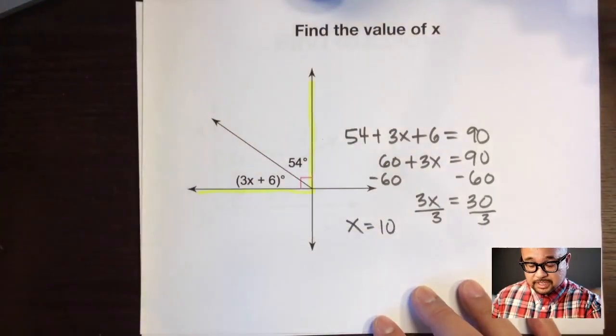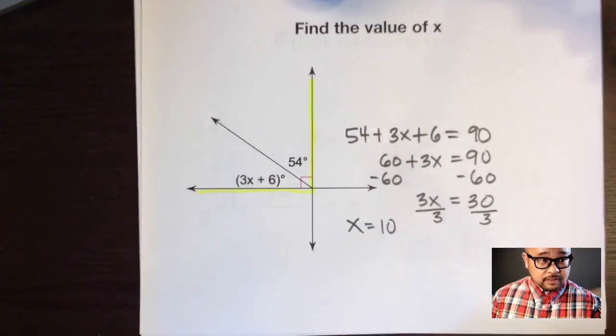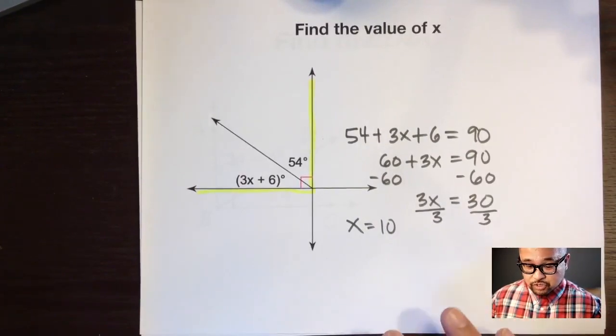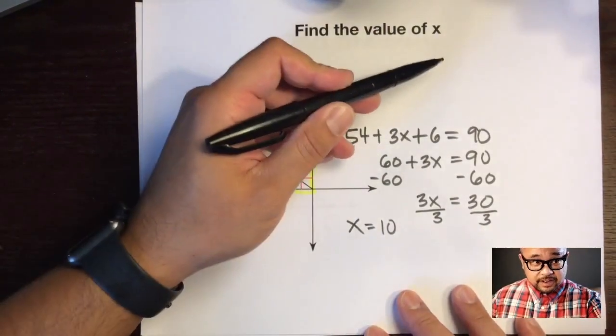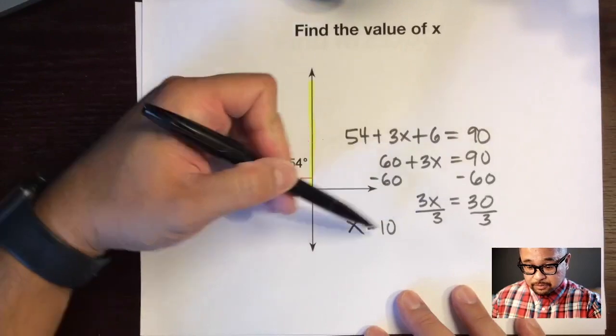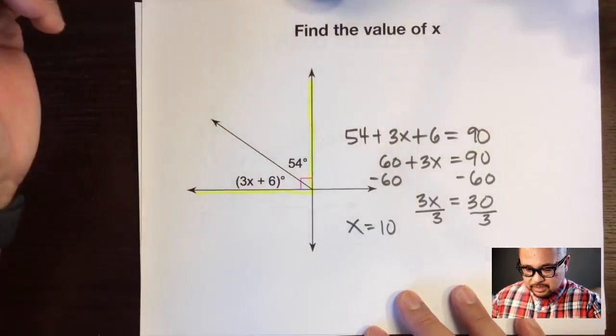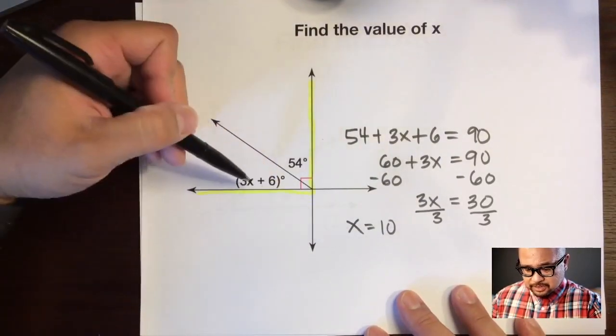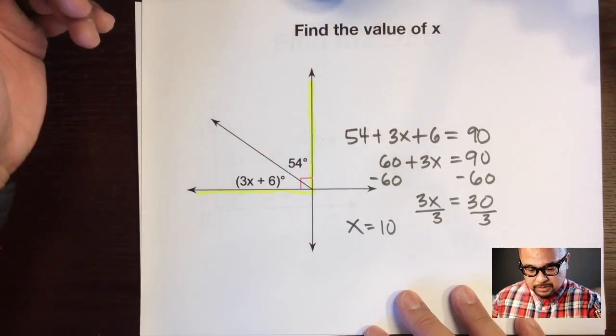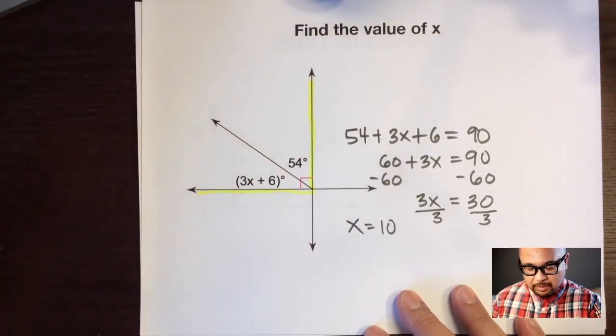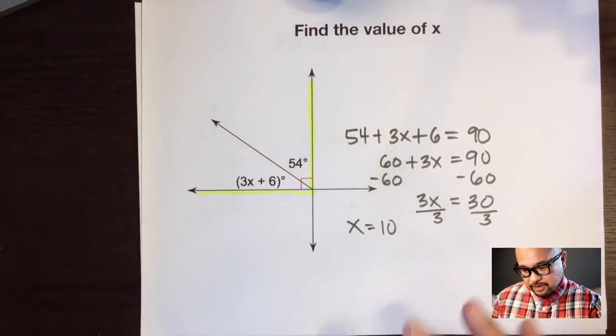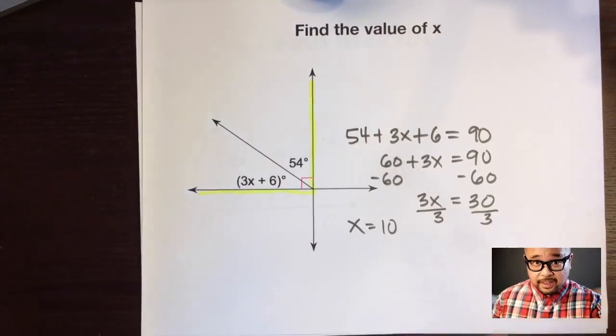Now be careful, it doesn't say find the measure of the angle, it just says find the value of x, the variable. So don't put 10 degrees because the angle isn't 10 degrees. It's x equals 10, so don't worry about putting degrees when you're trying to find a variable, only when you're trying to find the angle measure.